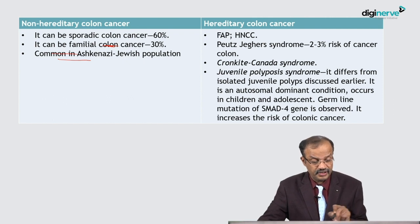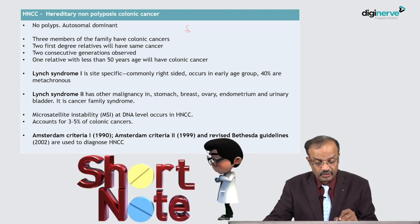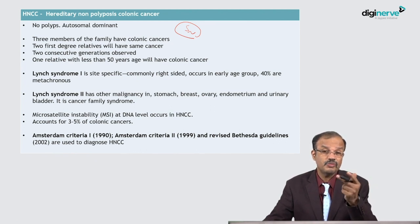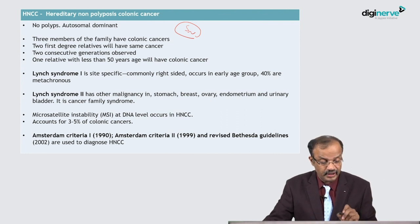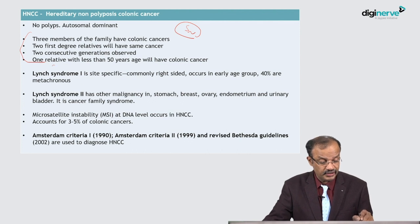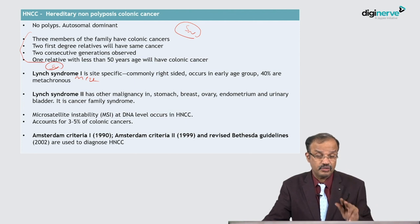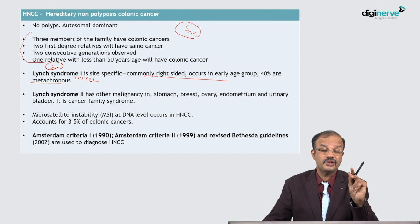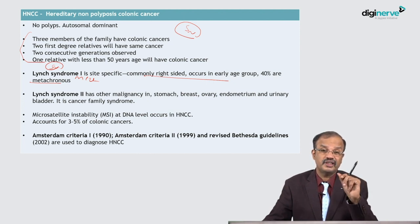HNPCC is an important short note. It is a non-polyposis condition — no polyps — and is autosomal dominant. The Amsterdam criteria requires: three members of the family have colonic cancers, two are first-degree relatives, two consecutive generations are affected, and one relative is diagnosed under 50 years of age. Lynch syndrome is a type of HNPCC. Lynch syndrome type 1 is site-specific, commonly right-sided colonic cancer, occurring at an early age group, and 40 percent are metachronous.